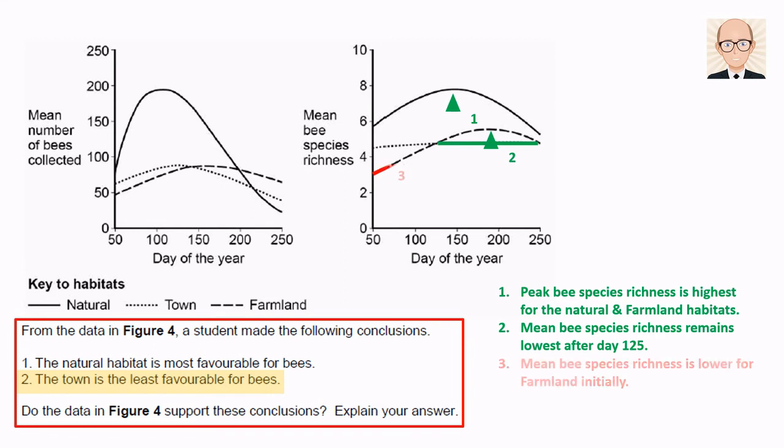However, mean species richness is lowest in the farmland initially, as are the mean bee numbers. So again, whether we write in support of the student's conclusion or in opposition, we have some evidence to back it up.